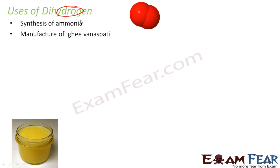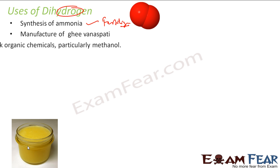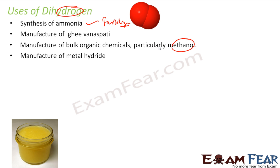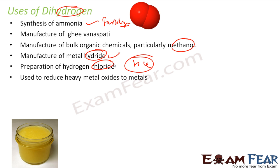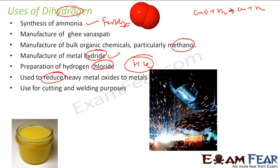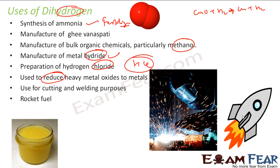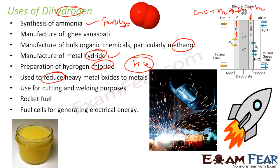We have covered the preparation and properties of dihydrogen; now let's talk about its uses. It is used in the synthesis of ammonia, which is used in fertilizers. It is used to prepare vanaspati ghee, to prepare organic chemicals such as methanol, and extensively in metallurgy. It is used to manufacture metal hydrides, to prepare HCl, and to reduce metal oxides to metals — for example, copper oxide is reduced to copper. It is also used for cutting and welding, as rocket fuel, and for fuel cells that directly convert hydrogen's chemical energy into electrical energy.